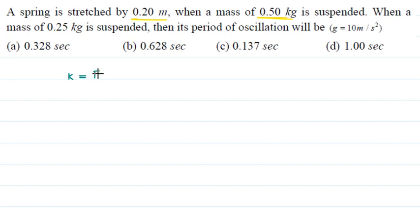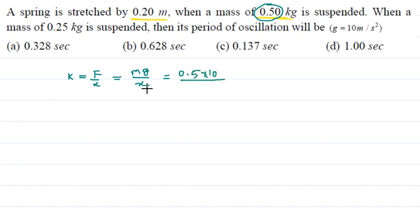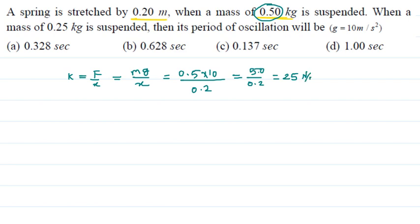From the first condition, we find the spring constant: k equals force per unit extension equals mg upon x equals 0.5 times 10 upon 0.2 equals 5 upon 0.2 equals 25 newton per meter. This is the force constant of the given spring.